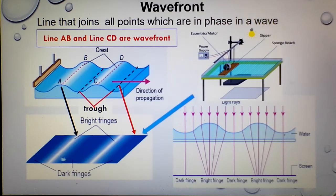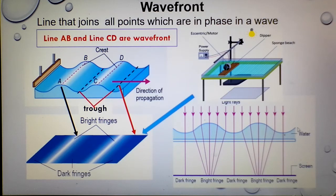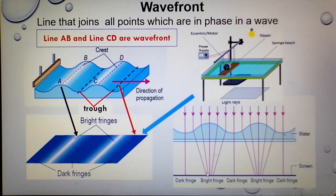How does the pattern of dark and bright fringes form? When the vibrator vibrates, it creates a water surface with alternating troughs and crests. The light ray from the lamp, when passing through the crest part, acts like a convex lens — it causes the light ray to converge to one point. When light rays converge, there is a high intensity of light, which produces a bright fringe.